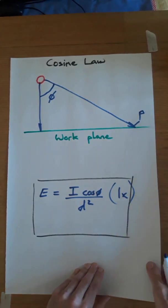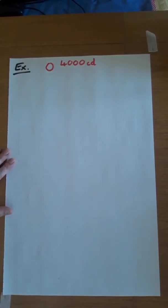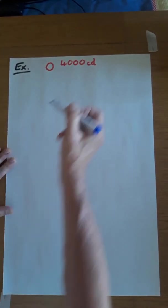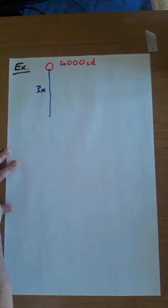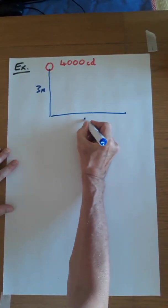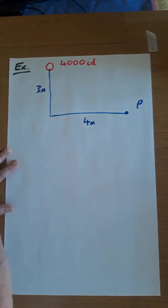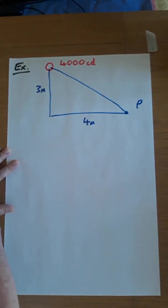Let's have a look at the example that is on your sheet. So on your sheet, I've said we have a lamp which is 4000 candela intensity. We then have three meters down to the working plane. This is the perpendicular height. And it's four meters further along the work plane. This is the point P where we want to determine what the illumination is. So this is the distance that we need to know.